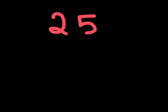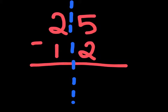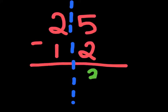Let's take the example of 25-12. The first step is breaking this up into right and left hand columns. We subtract just the right hand column first: 5 minus 2 is 3. Then we go on and subtract the left hand column.